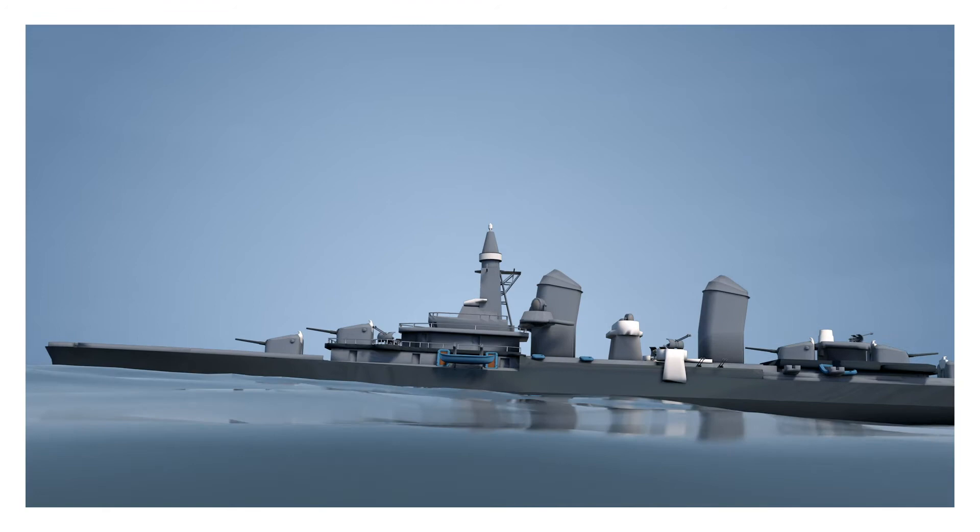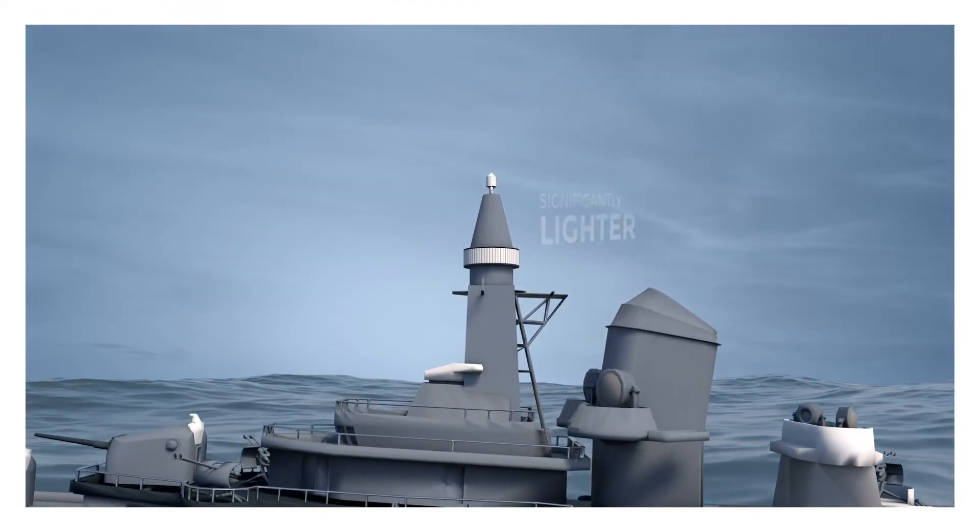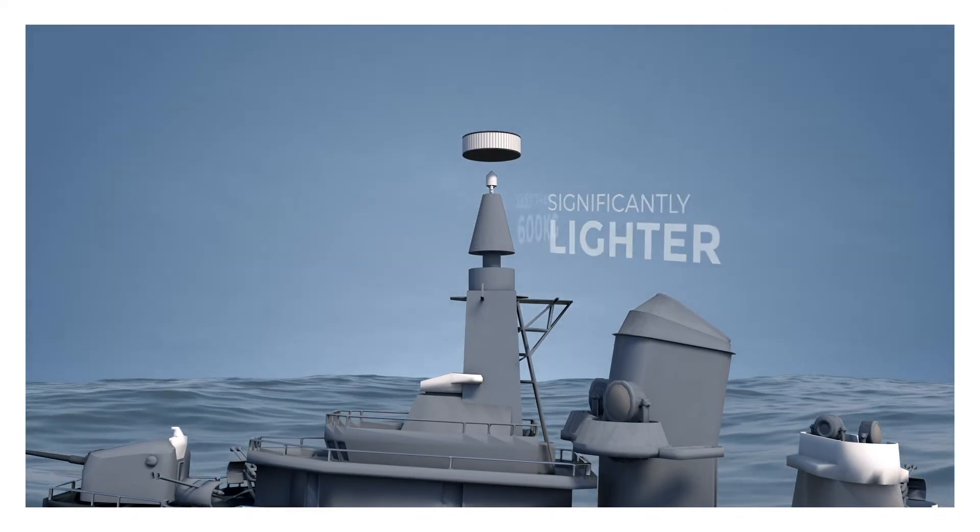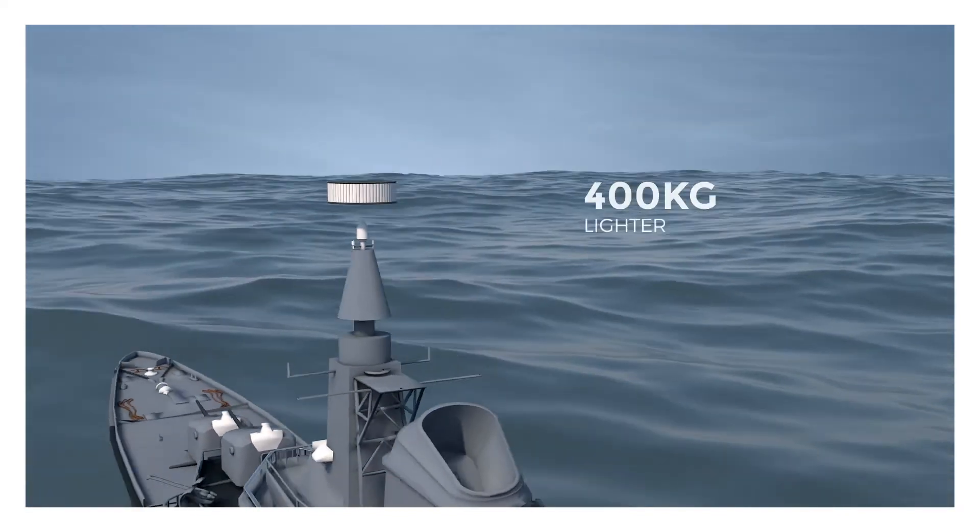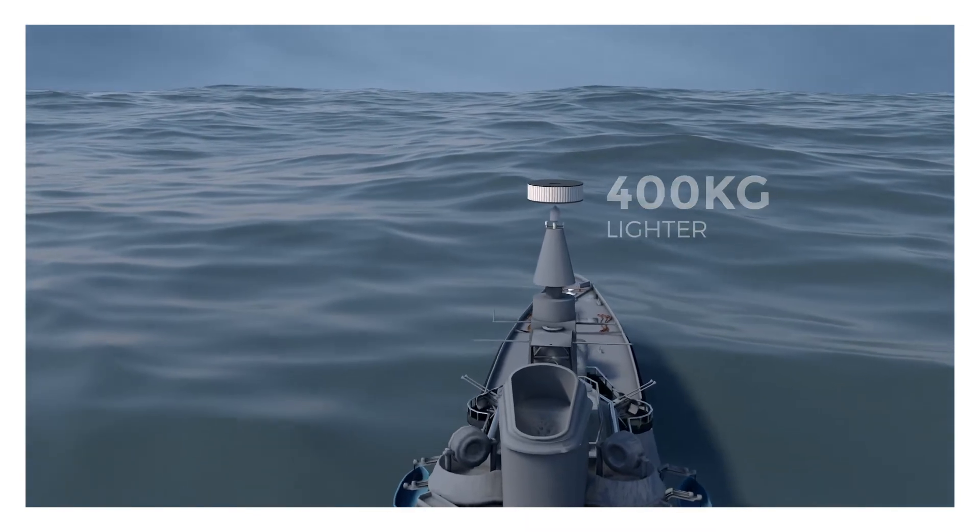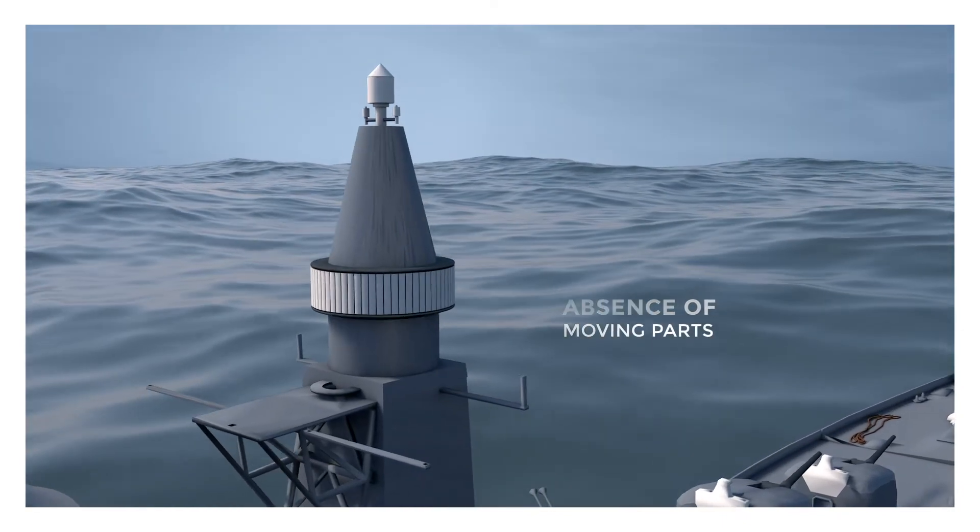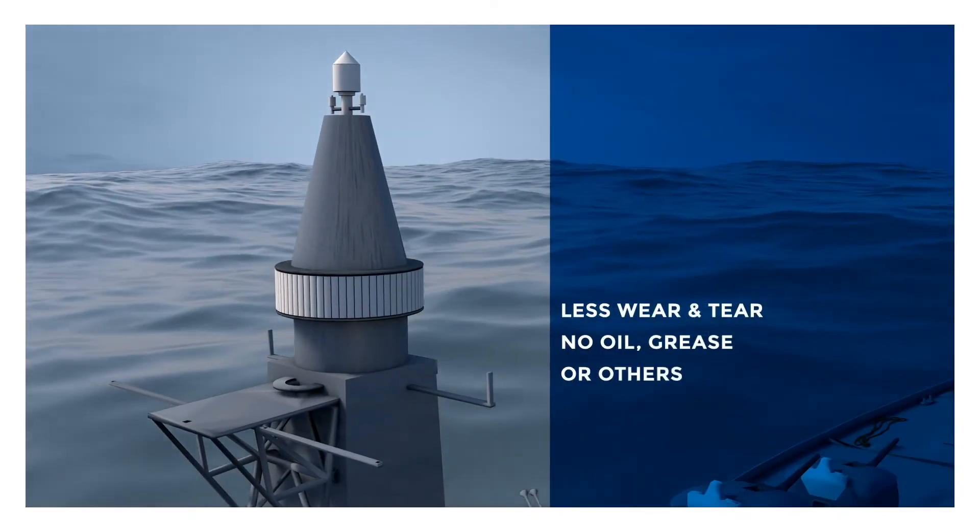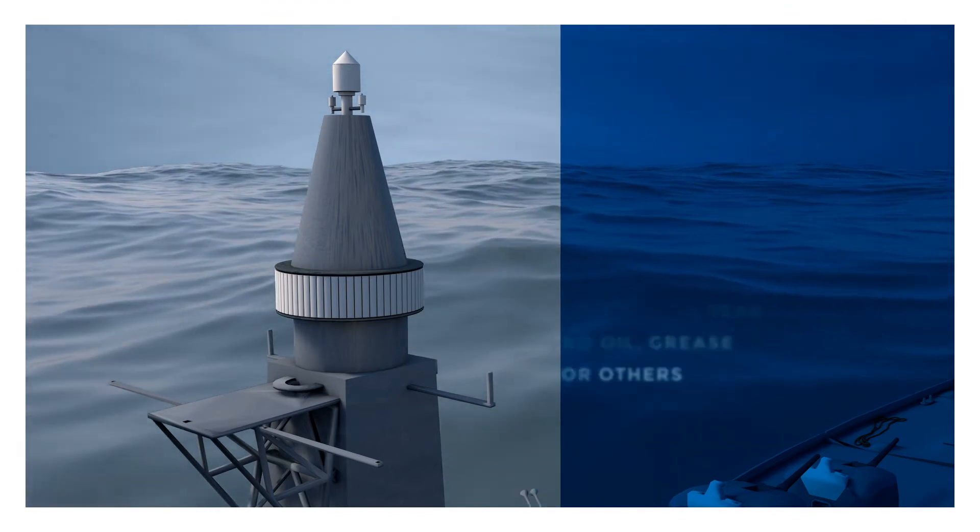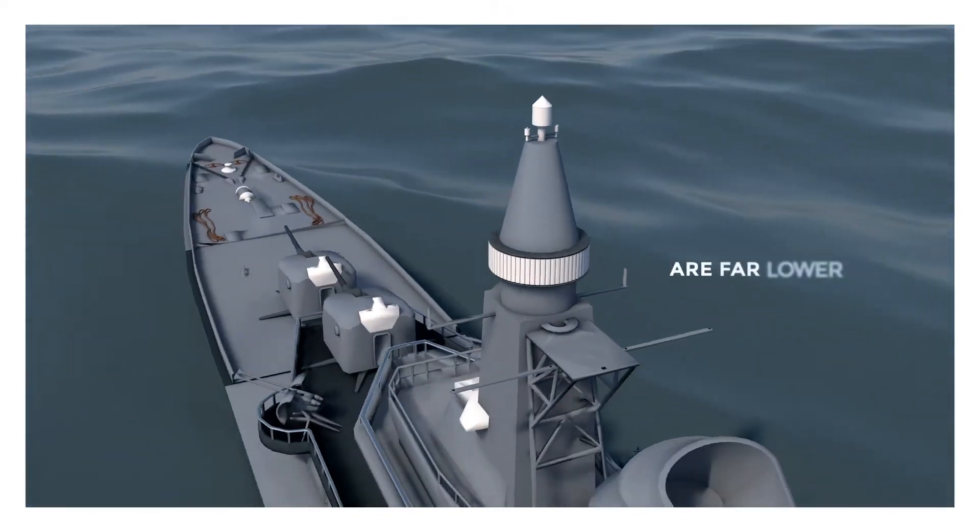LISA non-rotating IFF is also significantly lighter than other active or passive IFF antennas with comparable performance. With less than 600 kg, LISA is easily 400 kg lighter than its competitors. Another advantage of a non-rotating antenna is the absence of moving parts. This, of course, means less wear and tear and no oil, grease, or any other consumables usage. Bottom line, maintenance and therefore life cycle costs are far lower.